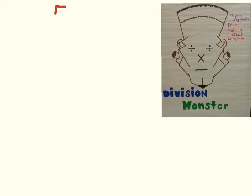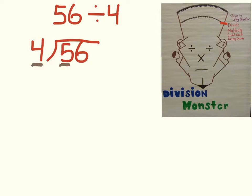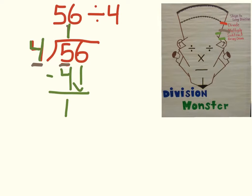Here's another example: 56 divided by 4. I write it with the dividend in the box and the divisor in front. Now I'm ready to begin. The first step is to divide, so I divide 5 by 4 — how many times can 4 go into 5 without going over? Counting by 4s: 4, 8 — I'm already over 5. So 4 can only go into 5 one time. I put 1 up top above the 5, then multiply: 1 times 4 is 4. Next step: subtract, then bring down the next number.